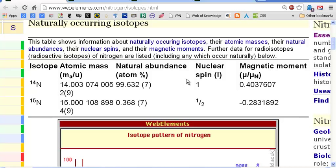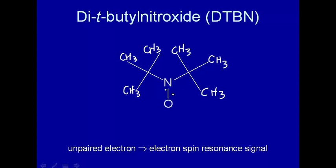That has a nuclear spin of one, so there's a possible interaction there. The electron can sense the nuclear spin, and I is equal to one for that nitrogen.